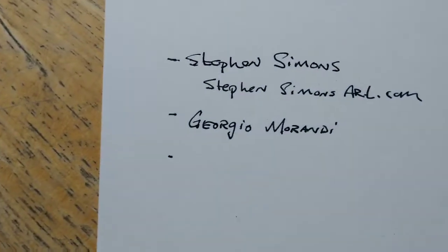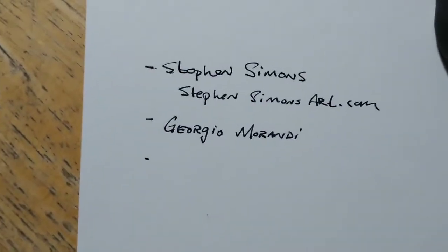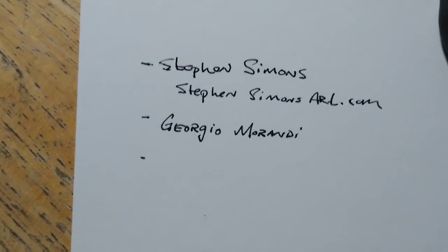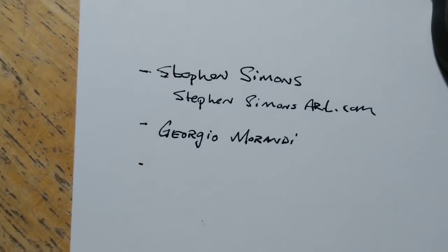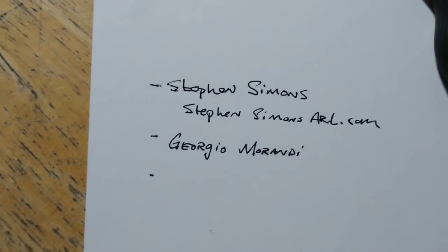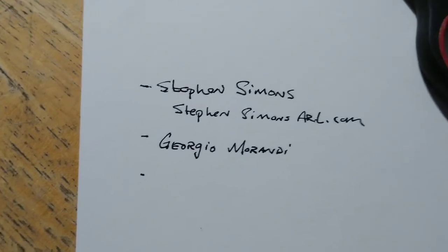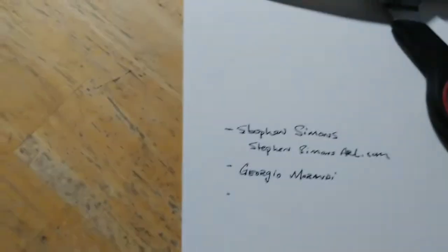Here are a couple of people to look at who are still life artists that make amazing compositions. Stephen Simons, who I mentioned earlier as my teacher — his website is stephensimonsart.com. And another artist named Giorgio Morandi, who is an Italian still life painter, post-World War II — very beautiful, very quiet, simple still lives. Stunningly beautiful.